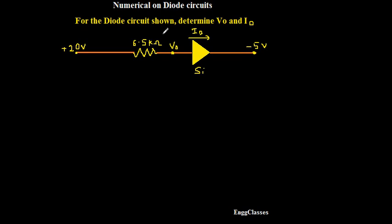For the diode circuit shown, determine V0 and ID. The task is to find the output voltage and the current ID. V0 is represented over here. ID is the current through the circuit and there is a plus 20 volt supply, a resistance of 6.5 kilo ohm in series, and a supply of minus 5 volt.